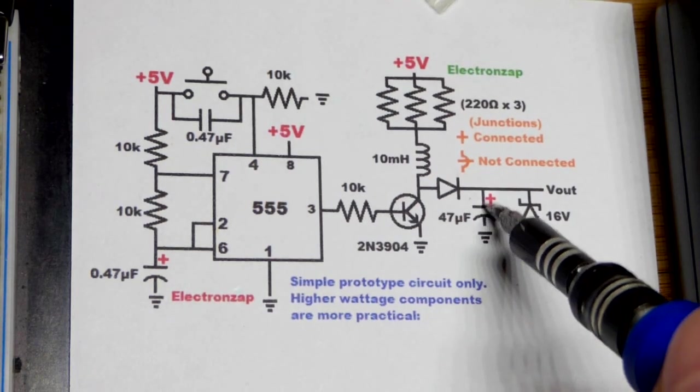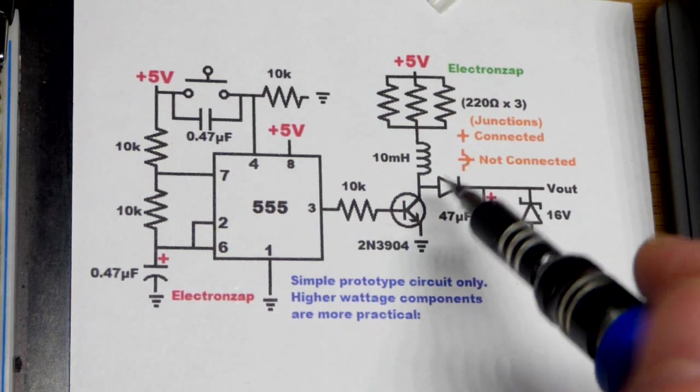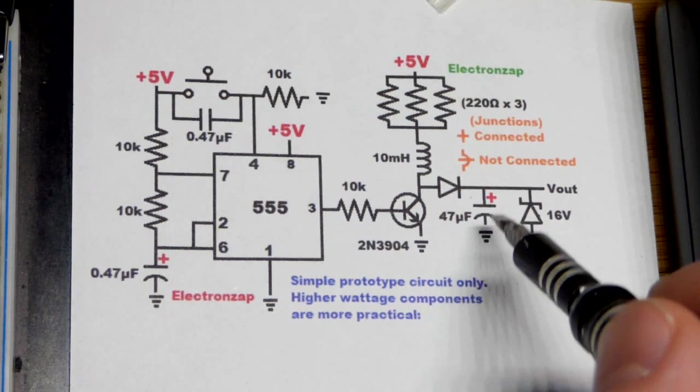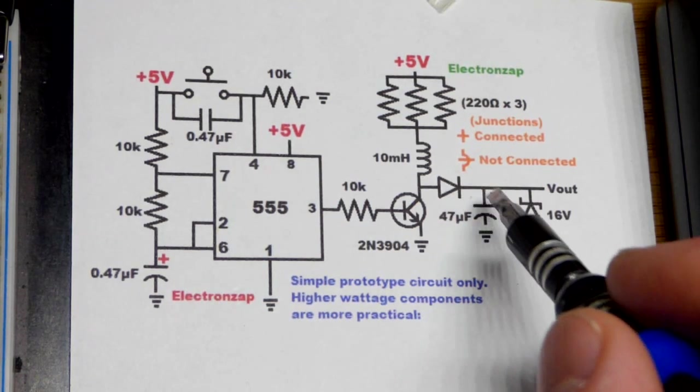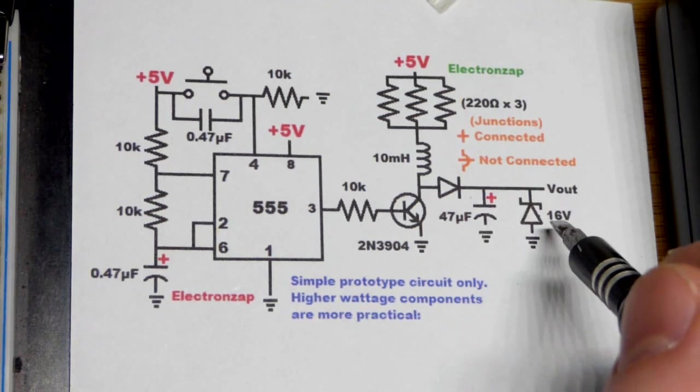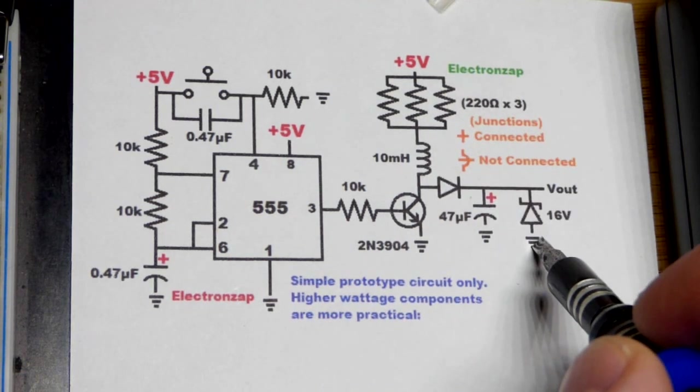When you put more current into a capacitor, the voltage always goes up. There's a linear relationship - you put twice as much current in, voltage is going to go up twice as fast and so on. So it pumps that voltage up.